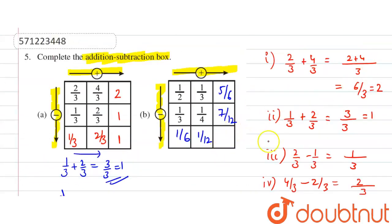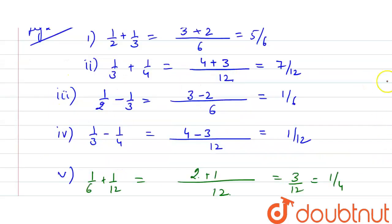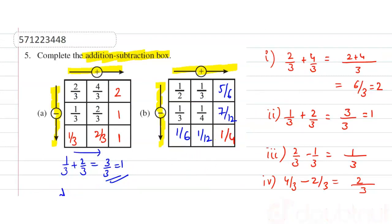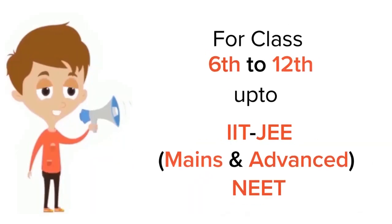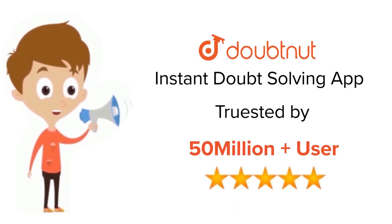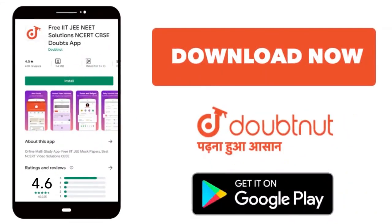So we have solved all the boxes, and the answer is 1/4. Thank you. For class 6 to 12, IIT JEE and NEET level, trusted by more than 5 crore students — download the DoubtNut app today.